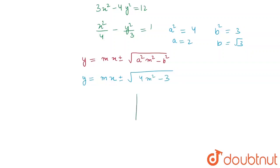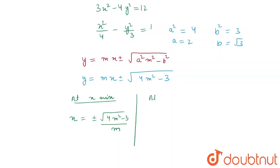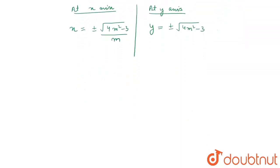It says the tangent makes equal intercepts. At the x-axis (where y = 0), the x-intercept is ±√(4m² − 3) / m. At the y-axis (where x = 0), the y-intercept is ±√(4m² − 3).